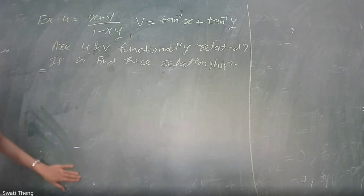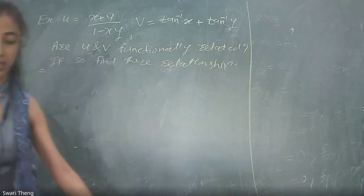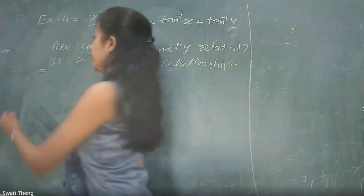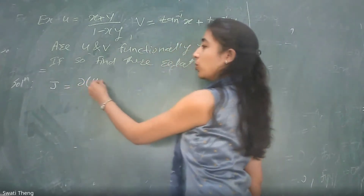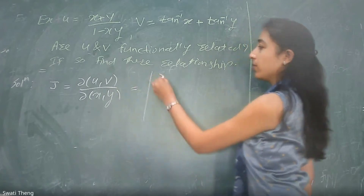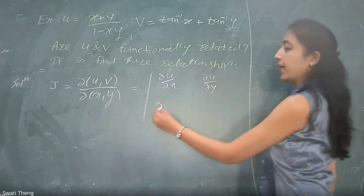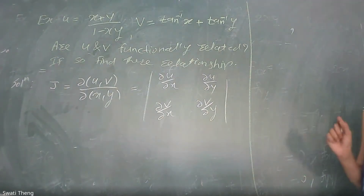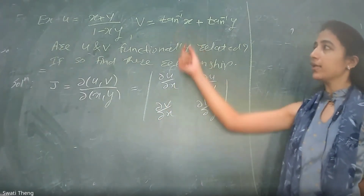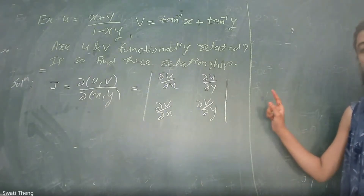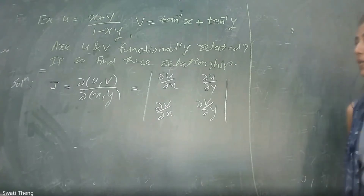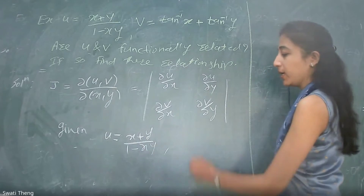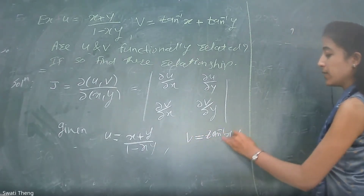We need to find the relation — that is, the equation which contains u and v without containing x and y. By definition, the Jacobian J equals the determinant of partial derivatives: del u/del x, del u/del y, del v/del x, del v/del y. We substitute v equals tan inverse of x plus tan inverse of y.